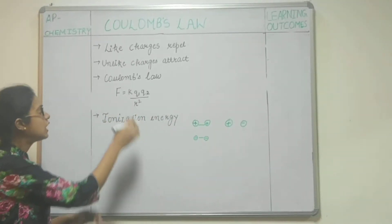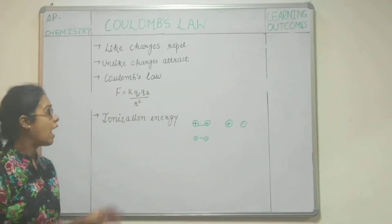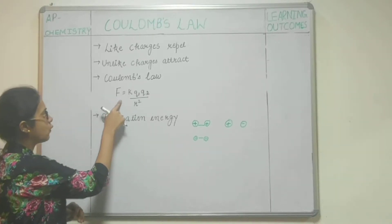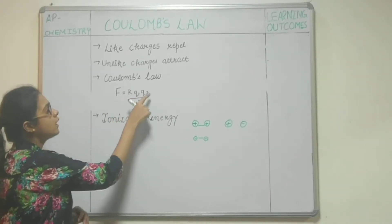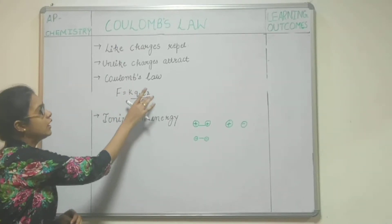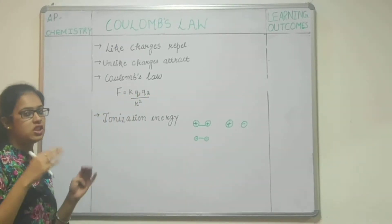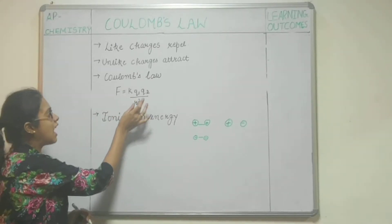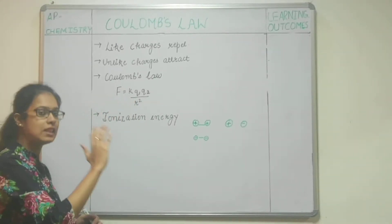On this basis, Coulomb's law was given and this is the equation: force equals K·Q1·Q2 upon R squared. Here, Q1 and Q2 are the magnitude of the charges, K is Coulomb's constant, and R is the distance between these charges.